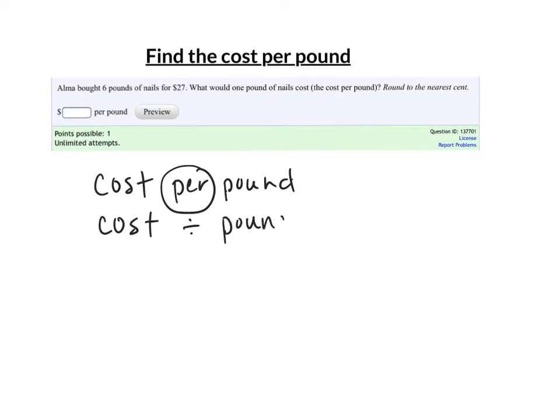In this case, I'm going to take $27, that's the cost, and I'm going to divide it by the number of pounds, which is 6. On the calculator I'll punch in 27 divided by 6, and I get 4.5. Now this is money, remember, so it's 4.50, or $4.50.